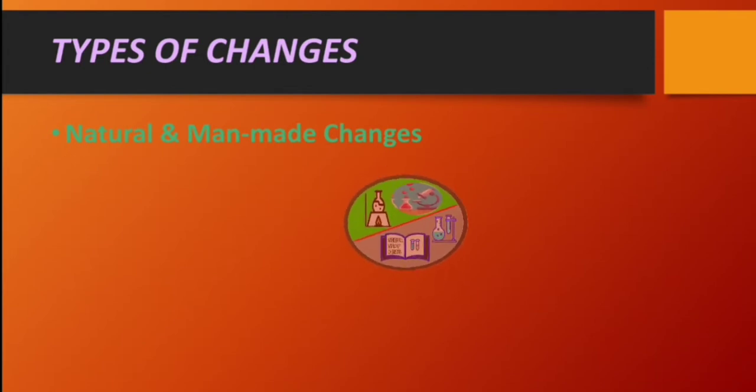The first one is natural and man-made changes. A change that takes place naturally is called a natural change. Example: change of day and night, earthquake, etc. The changes that take place due to human activities are mainly known as the man-made changes. Example: breaking of glass, cutting of trees, etc.